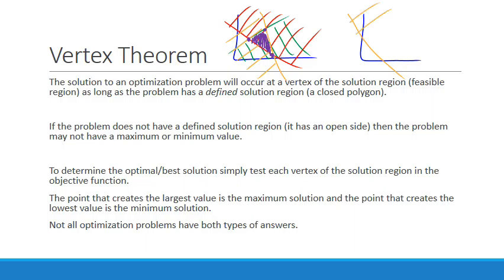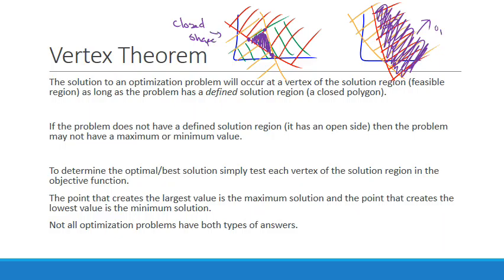What else can happen in these optimization problems is that you don't have a closed off area like that. I do have one vertex here, but all of this is my solution region, but there's no limit to it. It's going to keep going in that direction. If that occurs, you're not going to be able to find a maximum and a minimum. You'll be able to find one of them. This would be our closed polygon, a closed shape. And this one would be an open shape.